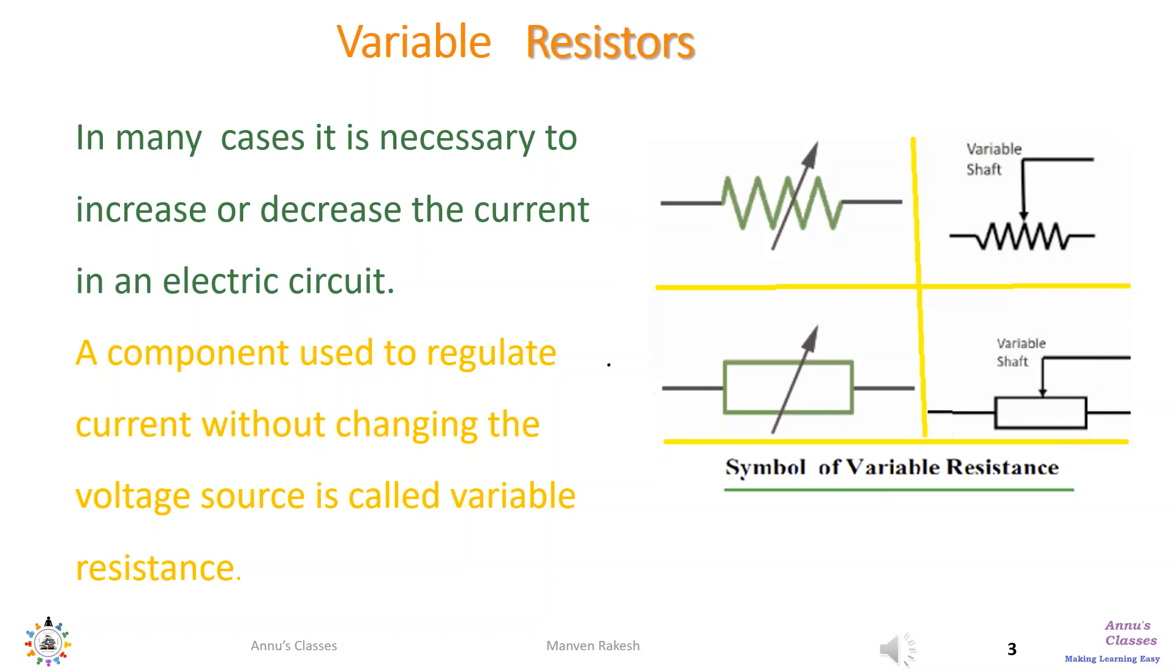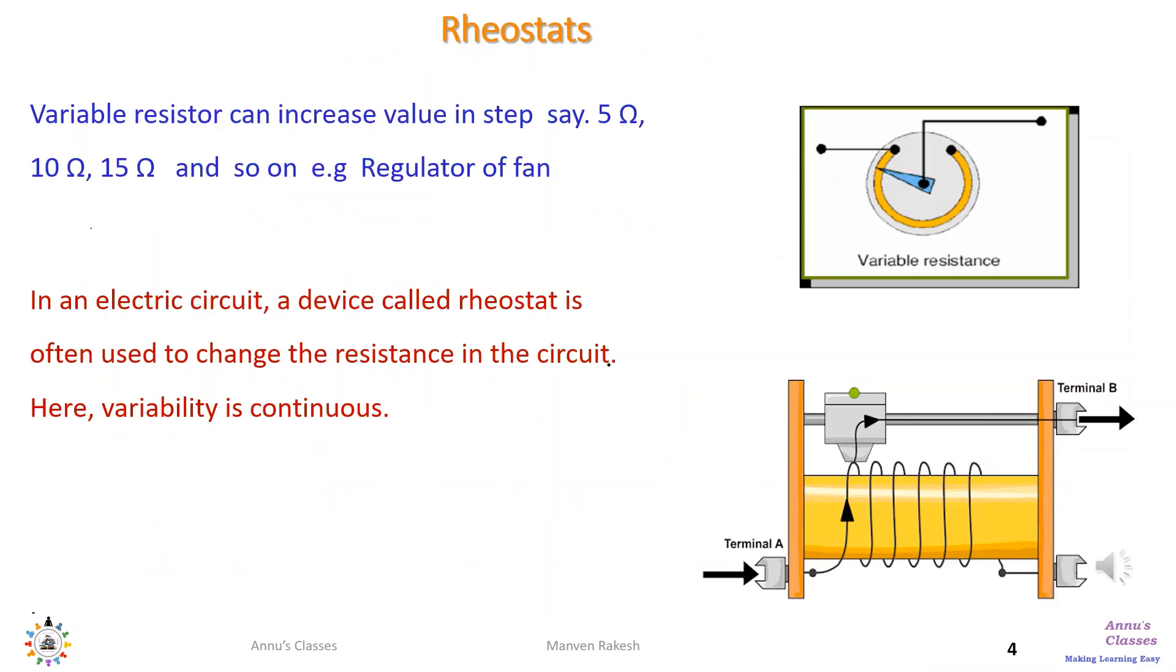Many times it becomes necessary to increase or decrease current in the electric circuit. To do so without changing the voltage, a component used is variable resistor in the circuit. Variable resistor can increase value in steps like 5 ohm, 10 ohm, 15 ohm, as we do in the regulator of the fan.